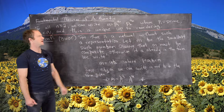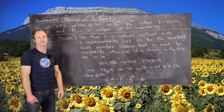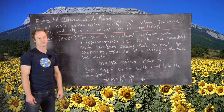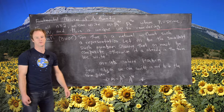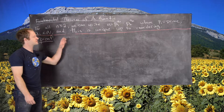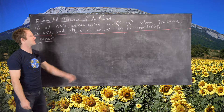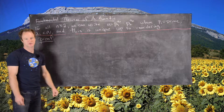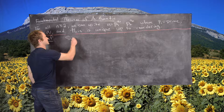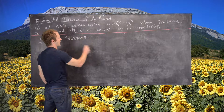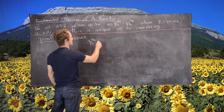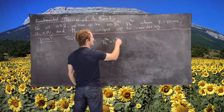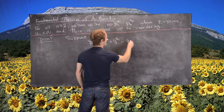We have proven that every number can be written as a product of powers of primes. Now we want to show that this representation is unique up to reordering. So let's suppose that p1^a1 · ... · pk^ak equals q1^b1 · ... · ql^bl — in other words, we have the same number represented as two products of powers of primes.